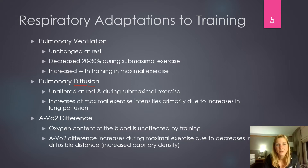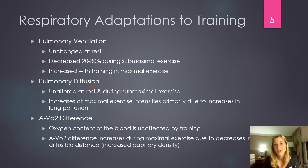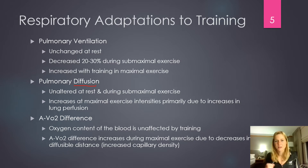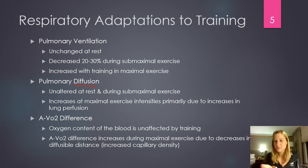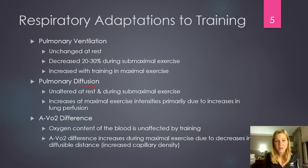Pulmonary diffusion — the ability of oxygen molecules to move from the alveoli into the blood — is unaltered at rest and during submaximal exercise. However, it will increase during maximal exercise due to increases in lung perfusion. During maximal exercise we've increased the capillary density of the pulmonary capillaries, allowing us to move oxygen from the lungs into the blood more effectively. We're also sending more blood to those capillaries because we've increased total blood volume. Interestingly, it's really the cardiovascular side being modified to improve pulmonary functioning.